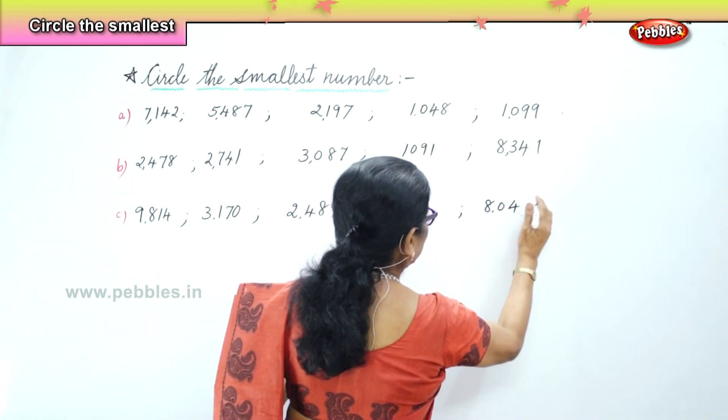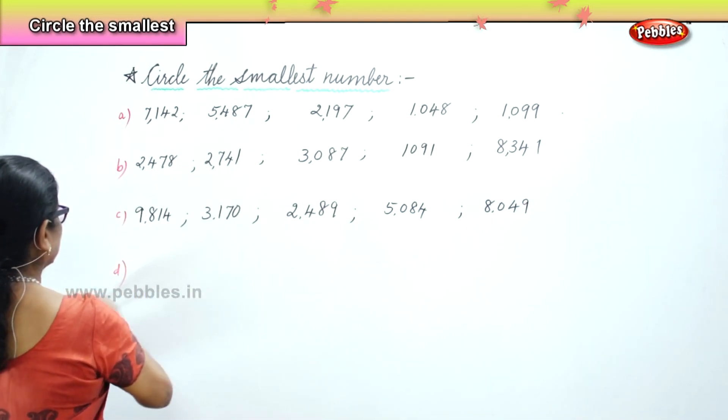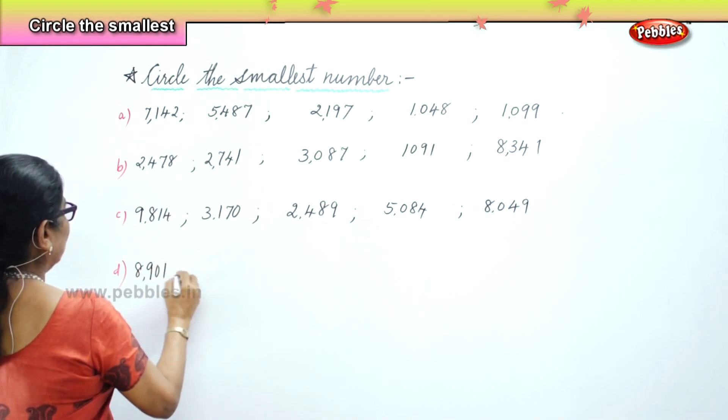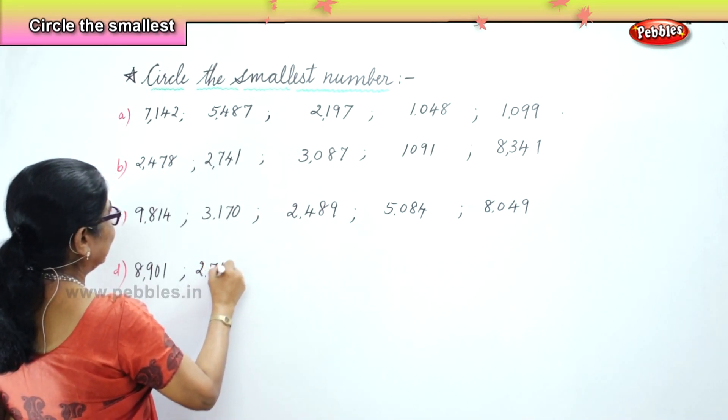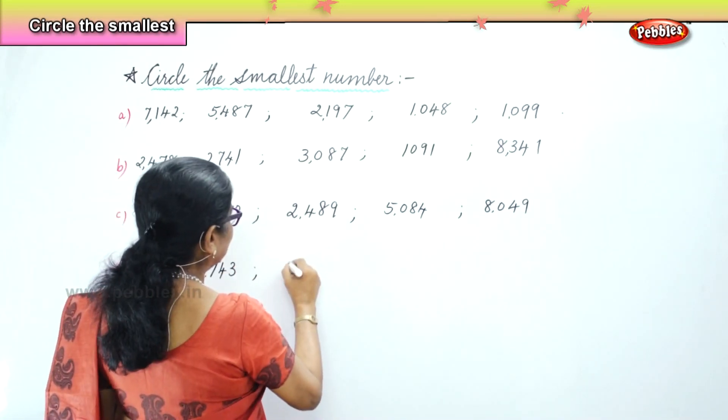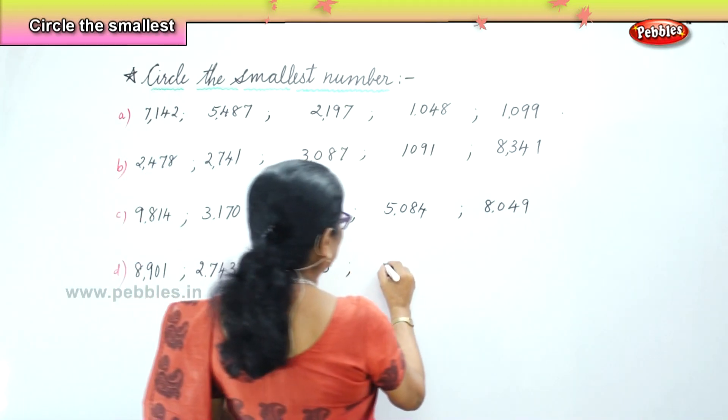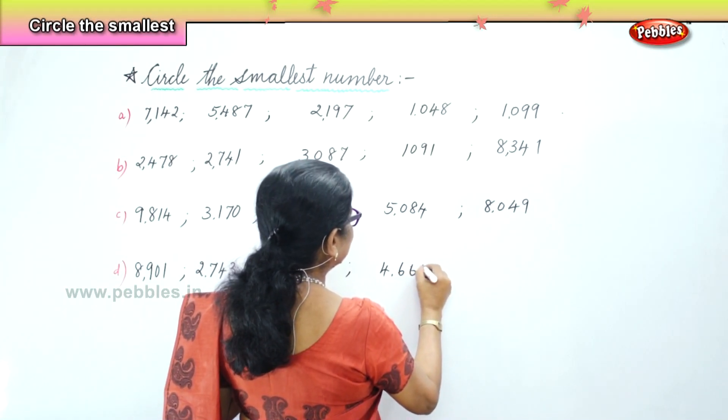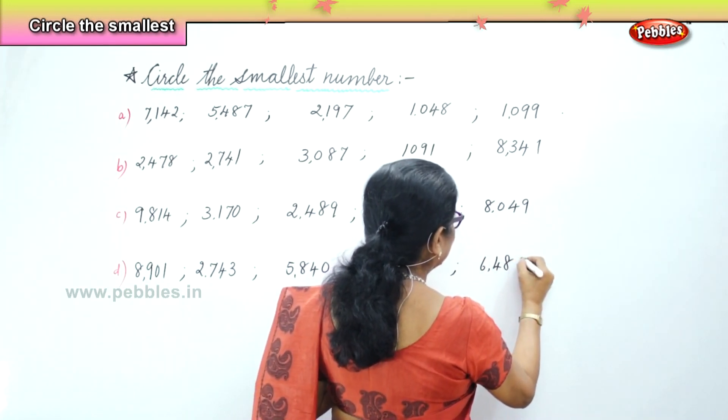Fourth set: 8,911, 2,743, 5,840, 4,665, 6,480.